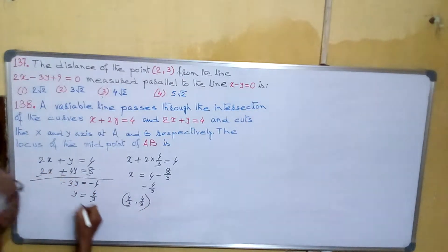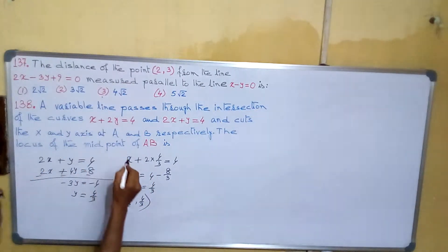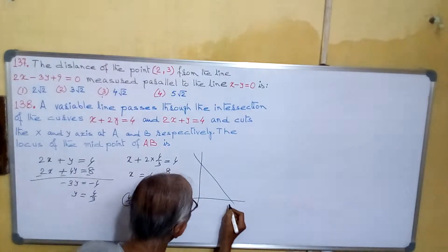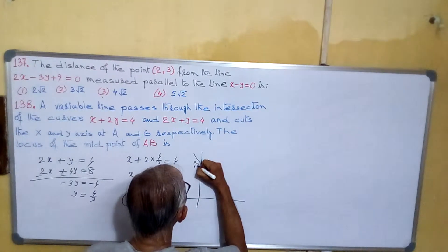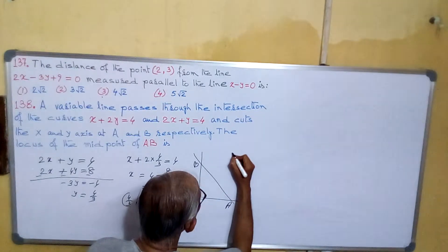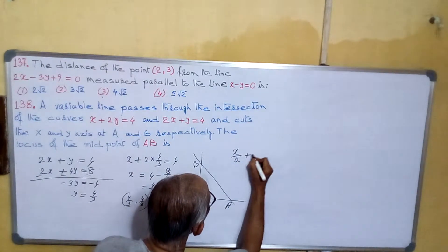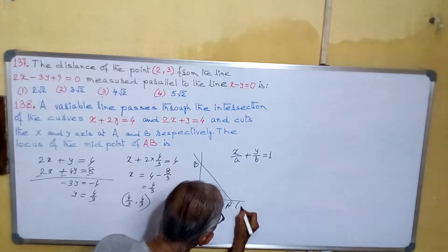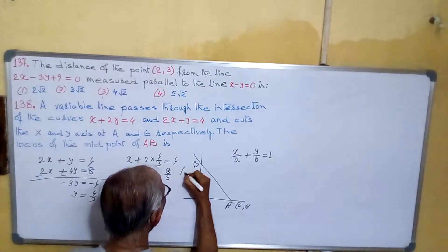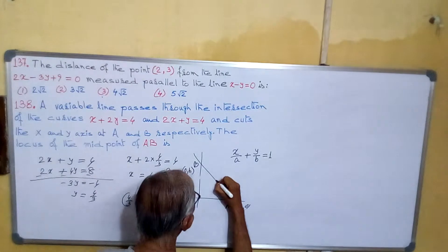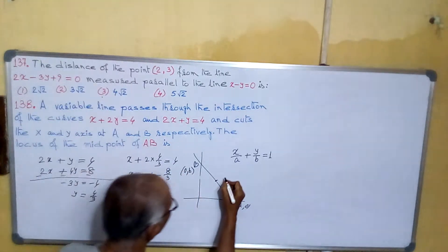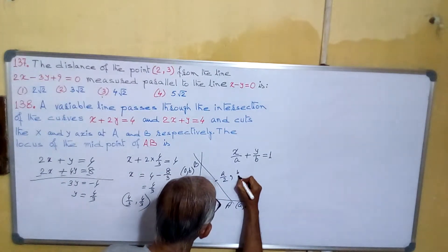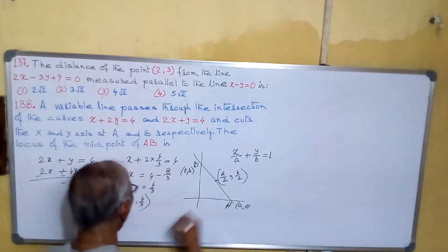Now suppose this line has equation x/a + y/b equals to 1. Then the x-intercept point is (a, 0) and y-intercept is (0, b). The midpoint of these intercepts will be (a/2, b/2). We have to find the locus of this midpoint. So we can say x equals to a/2 and y equals to b/2, or a equals to 2x and b equals to 2y.